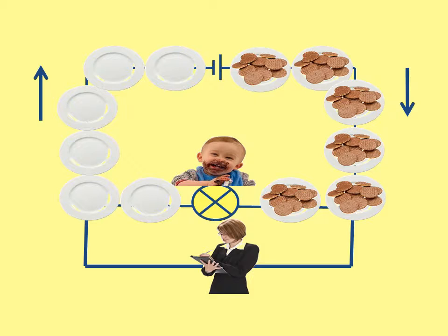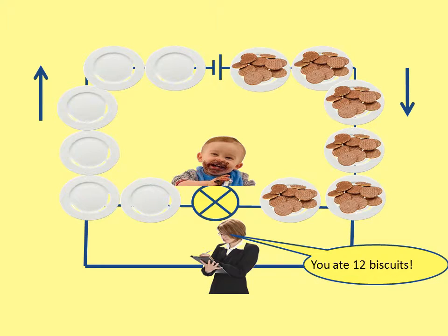Using the skills you've just learned, can you work out what this woman represents? She's counting how many biscuits are on the plate before, and then how many are on the plate after. This lady represents the voltmeter. What she's doing is counting the biscuits before, counting the biscuits after, and noting the difference. A voltmeter measures the energy of the charge before a component and the energy after, then tells you the difference. That's why voltmeters need to touch both sides of a component. The technical name for that difference is called the potential difference.